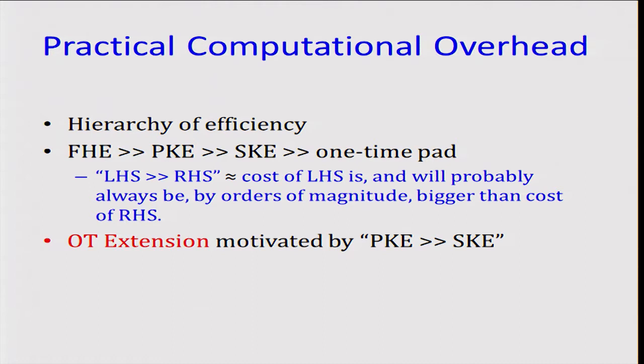But maybe there's also a hierarchy of complexity or efficiency. Namely, the cost of FHE is and will probably always be by orders of magnitude bigger than the cost of public key primitives, which in turn is and will probably always be by orders of magnitude bigger than the cost of symmetric key primitives.